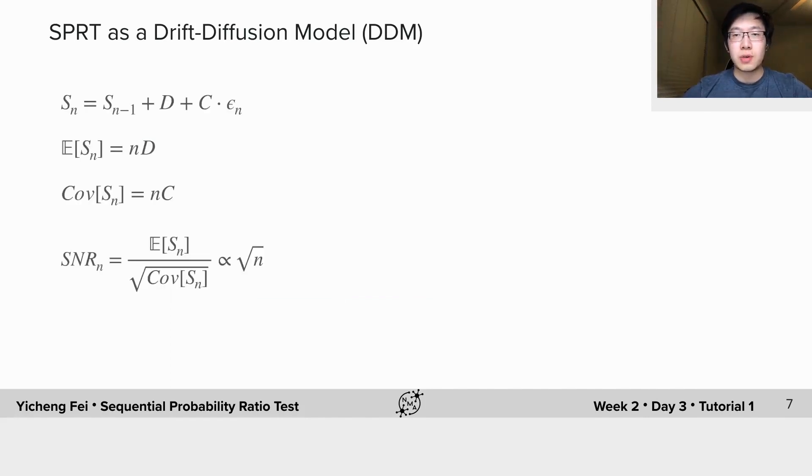In our discrete example, this drift-diffusion model is actually a random walk with drift. So we can use the results from a random walk. It can be shown that the mean and variance of accumulated evidence Sn are both linear in the number of samples. In other words, the standard deviation is proportional to the square root of n, which makes the signal-to-noise ratio also proportional to the square root of n.